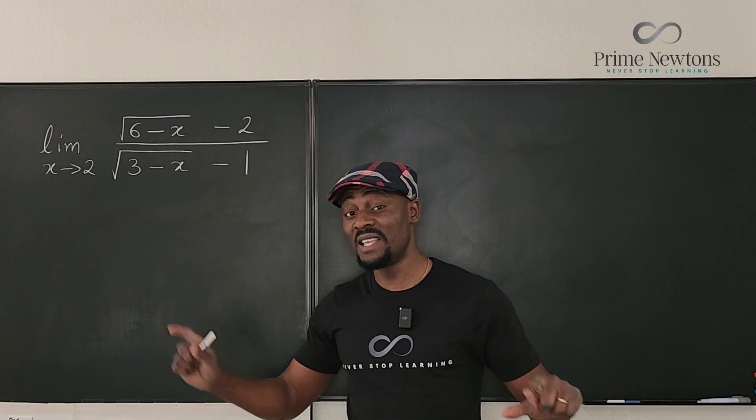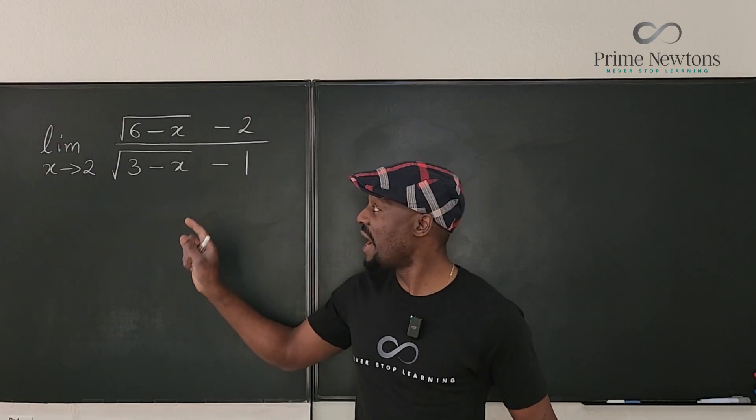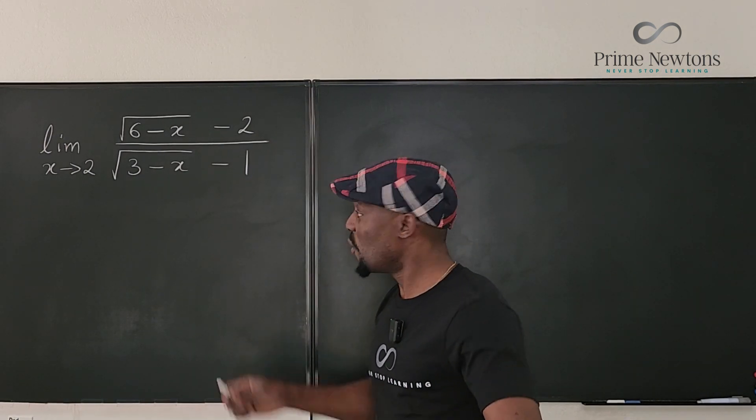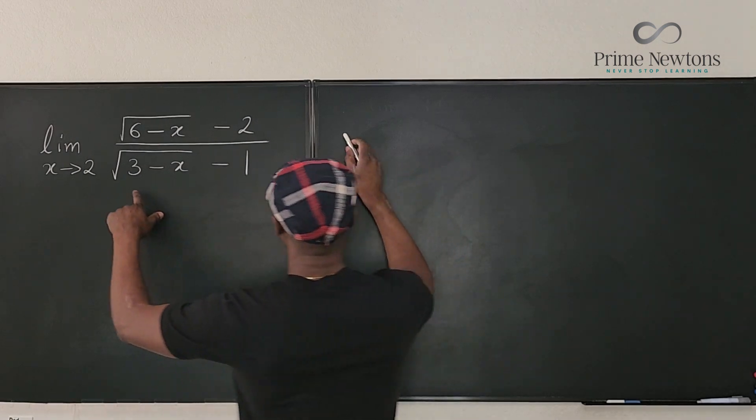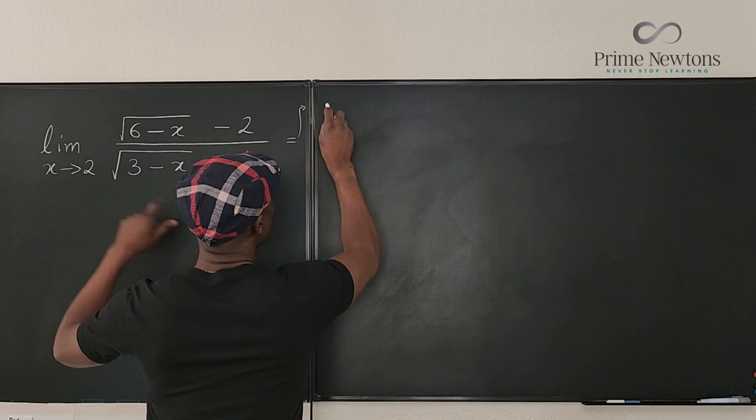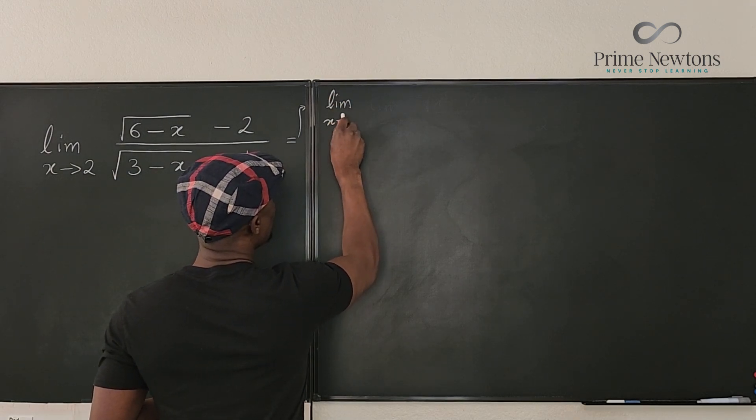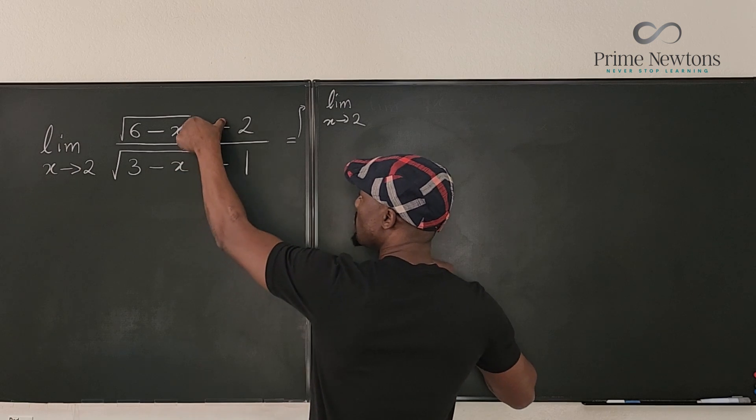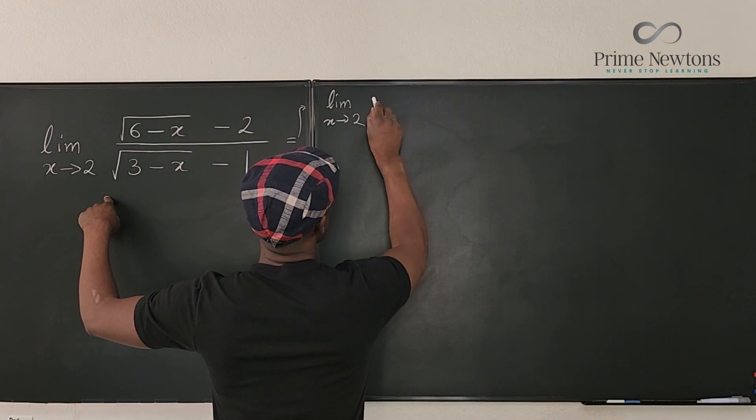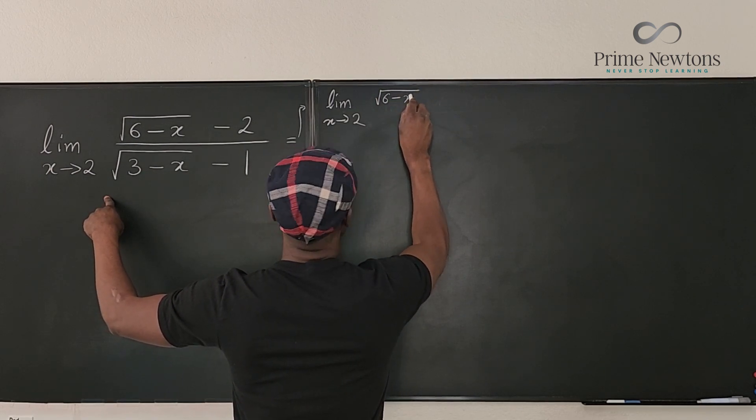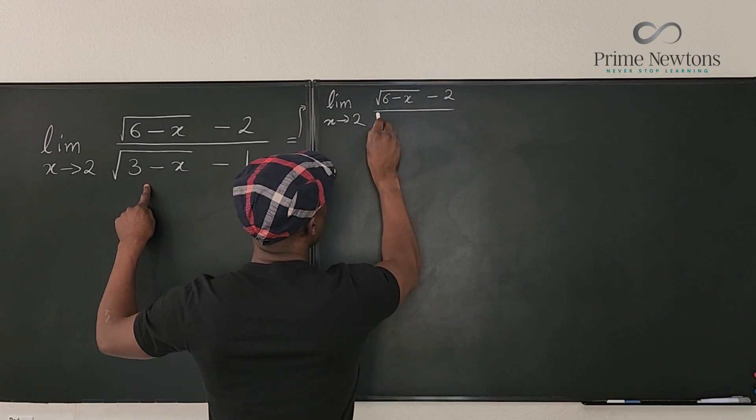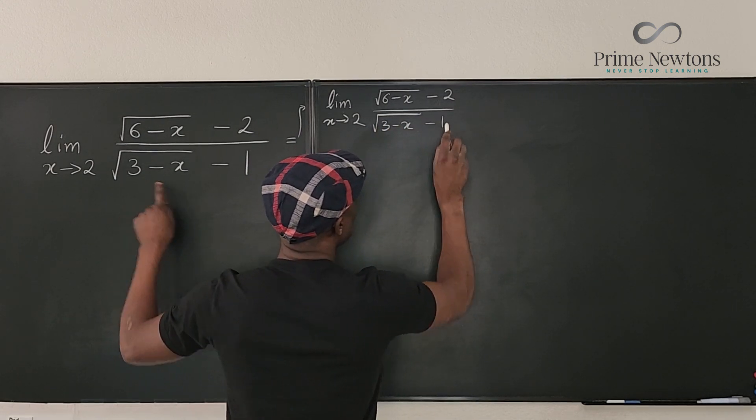So because of space and the length of this rationalization, I am going to do the work on this side. So this is what you should do in order to solve this problem. We're going to say that this is equal to the limit as x goes to 2 of, now I'm going to rationalize the top. So firstly, you write this expression. It's going to be rad 6 minus x minus 2 divided by rad 3 minus x minus 1.